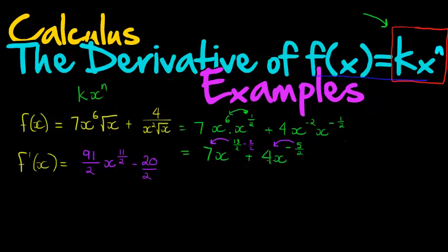Okay, and x to the power of, and now we have to subtract 1 again. So we'll subtract 2 over 2 because that's the same as 1. That will give me negative 7 times x to the power of negative 7 over 2.